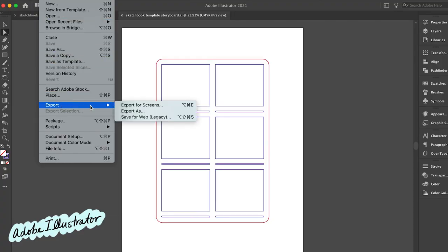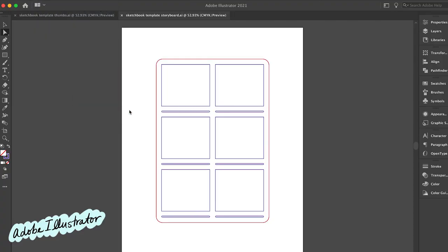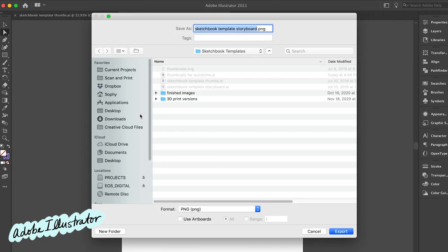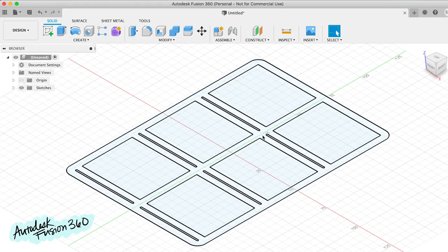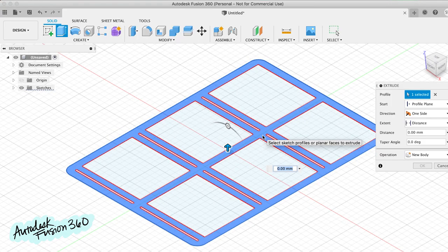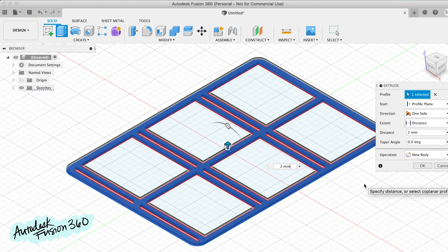To make the 3D model, I simply exported my original Illustrator designs as DXF files and imported them into Fusion 360. Of course, you could build the whole template in Fusion 360 if you prefer. I just happened to have started this project in Illustrator.